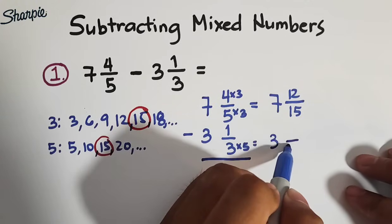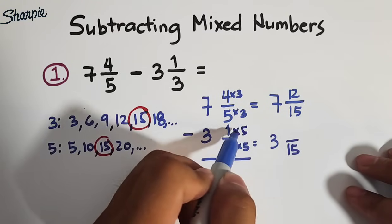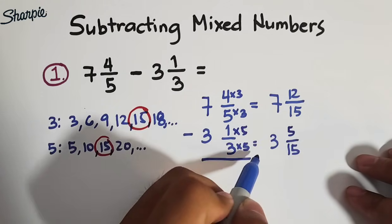So this is 3 times 5, which is 15. And then, multiply 1 by 5. That is 1 times 5. That is 5.